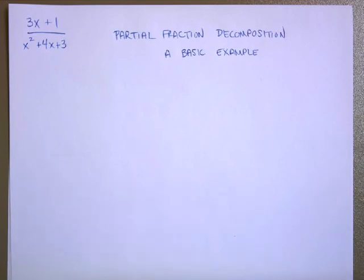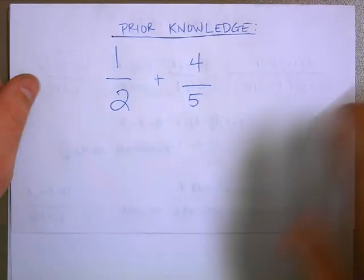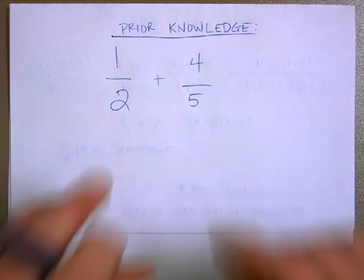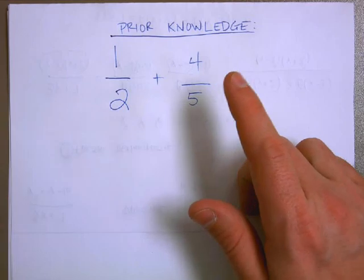Let's start off with a little bit of prior knowledge. A little bit of middle school math. If I told you to add the fractions 1/2 and 4/5, the first thing you would do is you would find a common denominator. And in this case, 2 and 5, the common denominator would be 10.